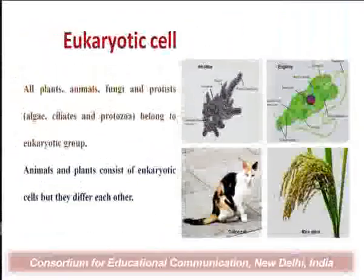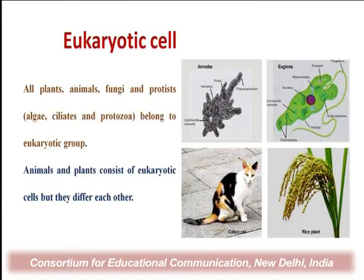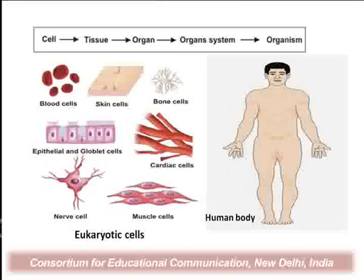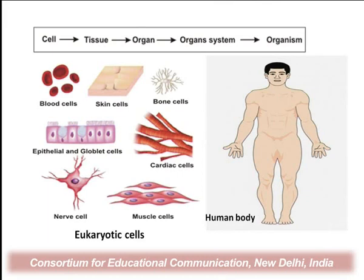Now let us discuss the eukaryotic cell. The eukaryotic cell is a complex structure with many compartments. Plants, animals, fungi, and protists are all composed of eukaryotic cells. Animal and plant cells consist of eukaryotic cells but differ from each other. The cell is made up of many organic and inorganic molecules, which organize into subcellular organelles. Cells convert into tissue, tissue into organs, organs into organ systems, and finally form the living organism — the human body.